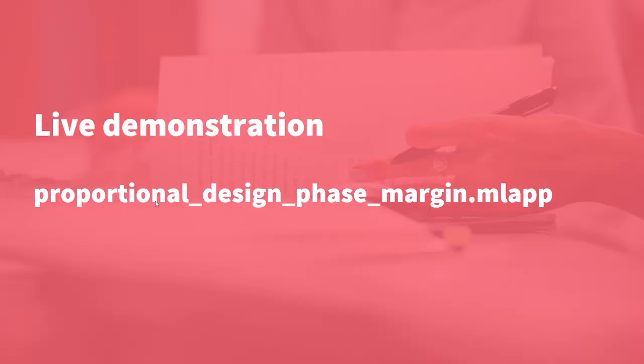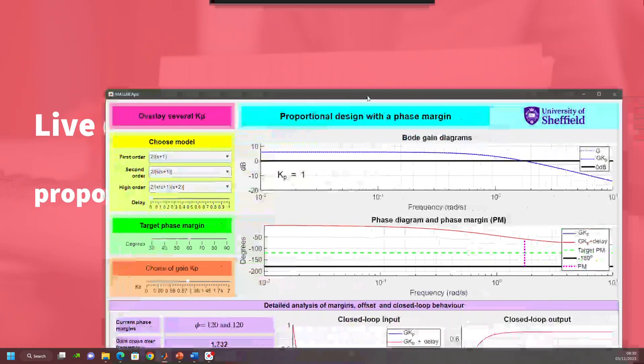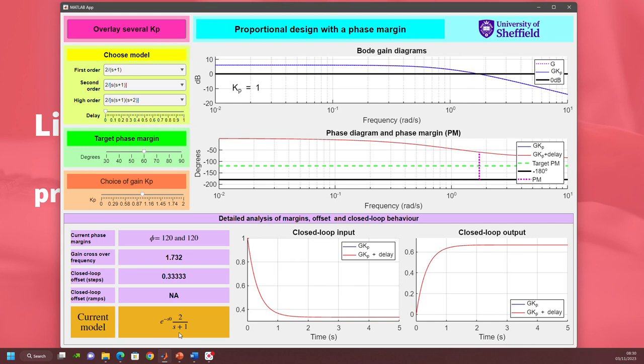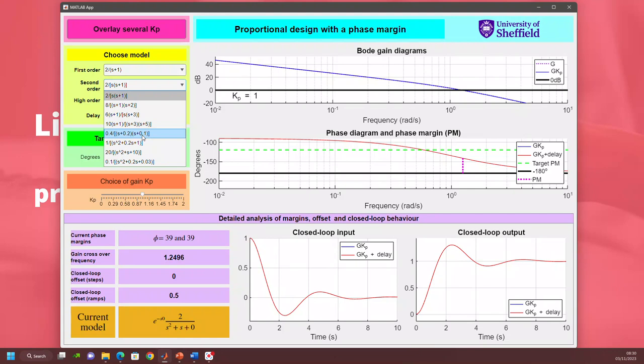Let's do a live illustration of the app. So here's the app. At the moment we've got a model of 2 over s plus 1, but I'm going to take a slightly more challenging one because it works better. So we'll choose this one here.